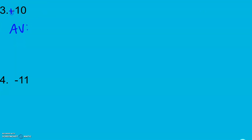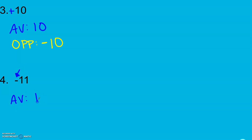For number 3: absolute value of 10 — it's positive 10, so we went to the right 10 units. We don't care about direction; the absolute value is 10. The opposite of positive 10 means we go to the left, so negative 10. For number 4: we have negative 11, which means we went to the left 11 units. Absolute value is just that distance — 11 units. For the opposite, we started going left, so the opposite is to the right — positive 11.